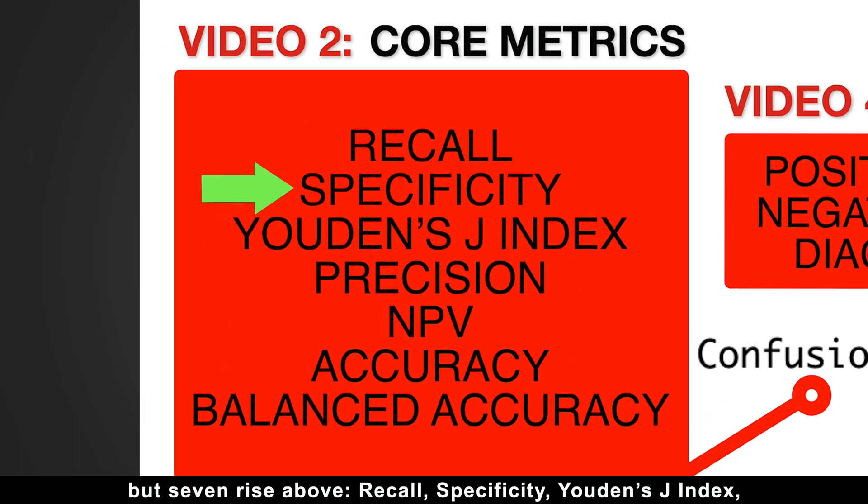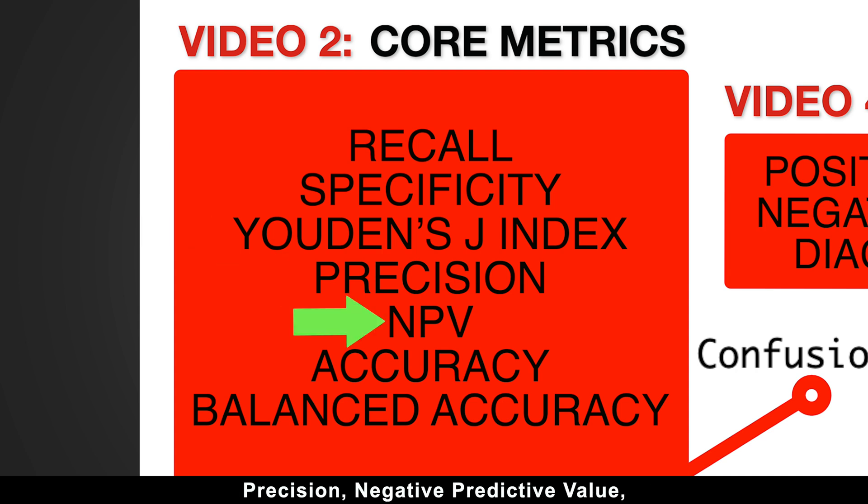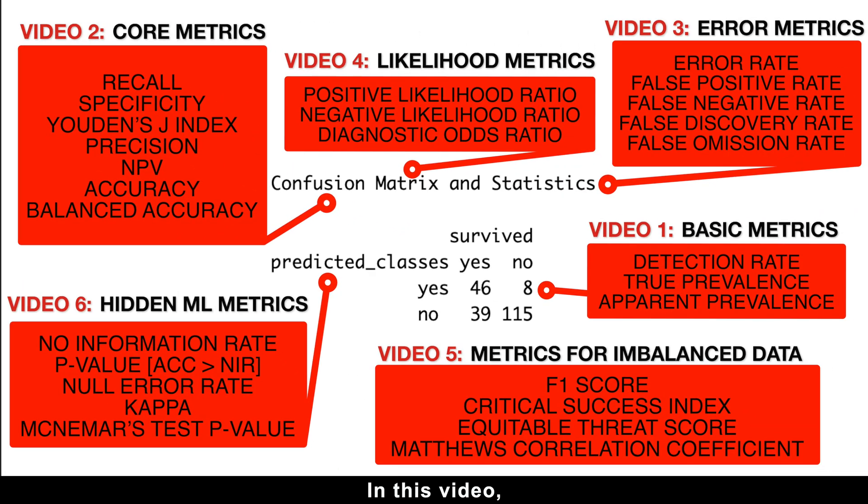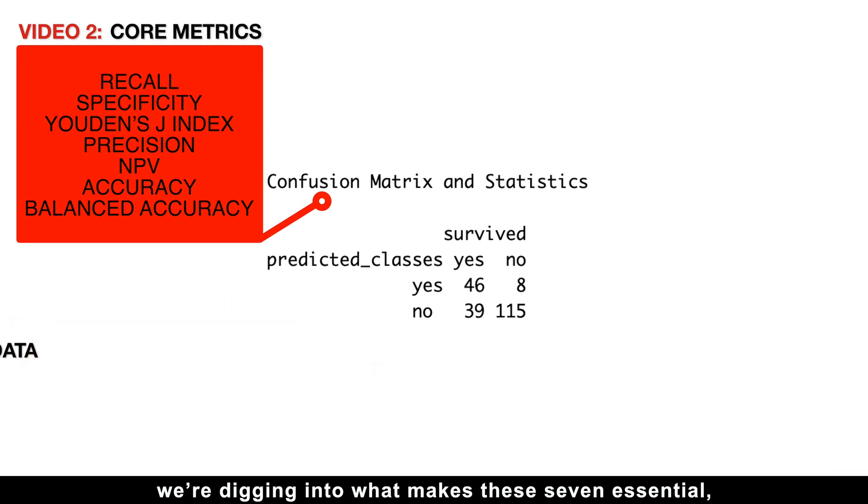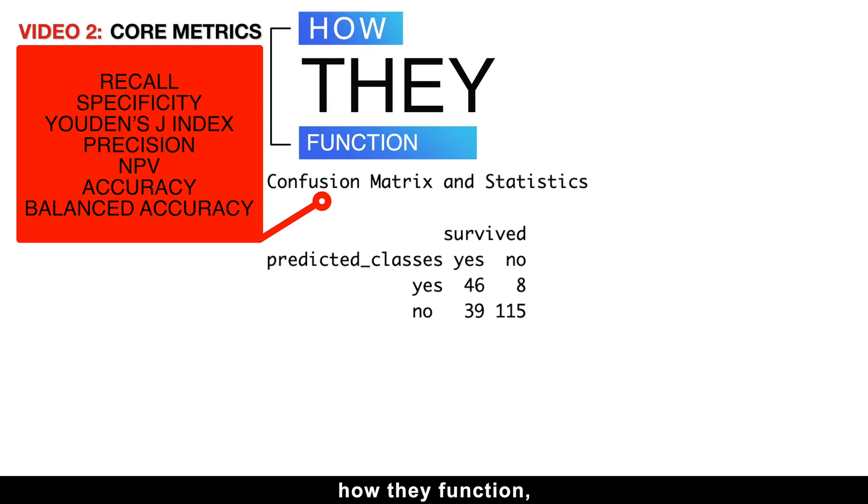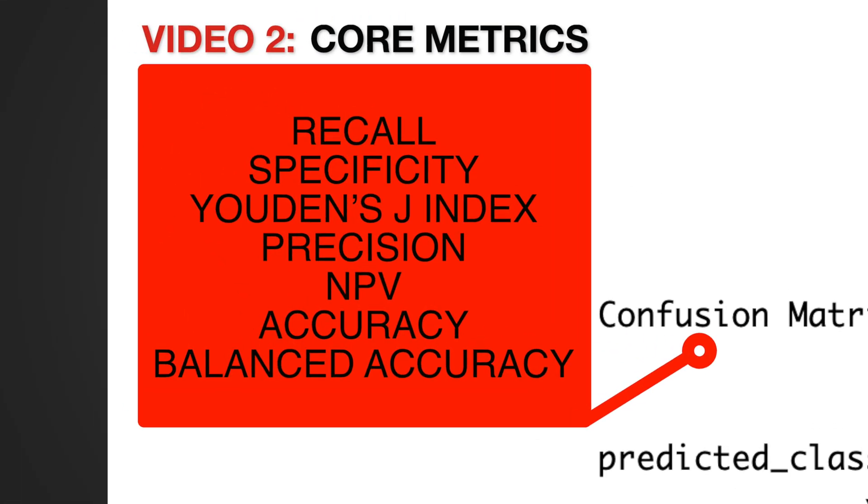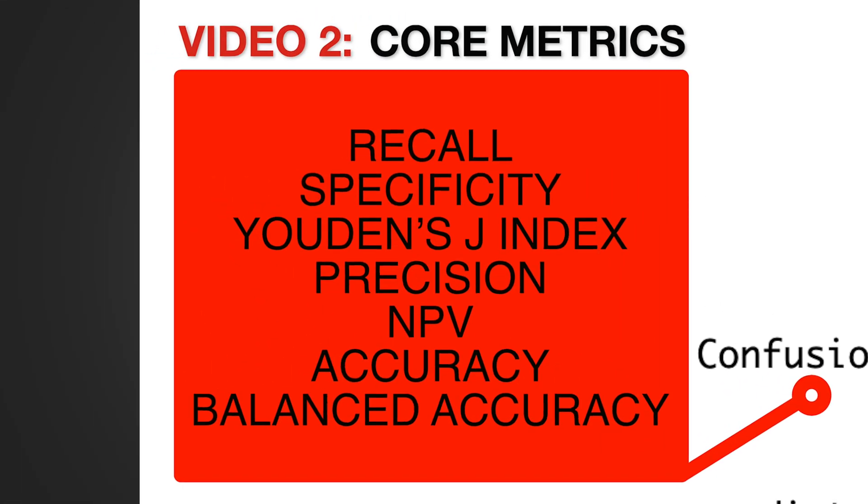Recall, Specificity, Youden's J-Index, Precision, Negative Predictive Value, Accuracy and Balanced Accuracy. In this video, we're digging into what makes these 7 essential, how they function, and why they are the backbone of machine learning.